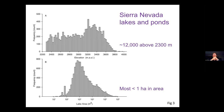In the Sierra, in the altitude range from about 2,300 meters to about 3,800 meters, there are over 12,000 lakes and ponds. Most are really quite small — less than a hectare in area. There are maybe 3,000 lakes in total, and Emerald Lake is right in the median of those lake sizes.